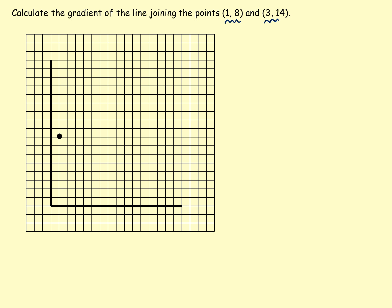Now 3, 14 means go across 3 and up 14. So that would have been 8, 9, 10, 11, 12, 13, 14.